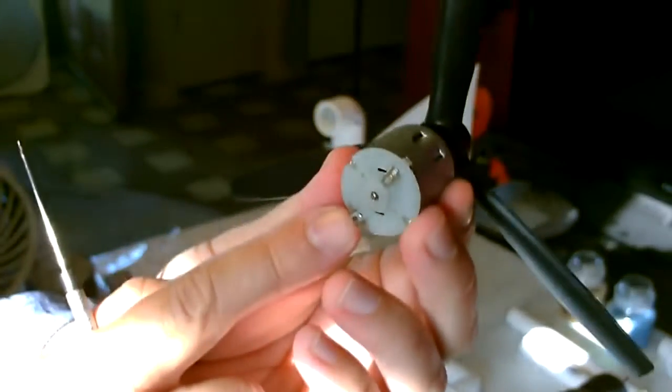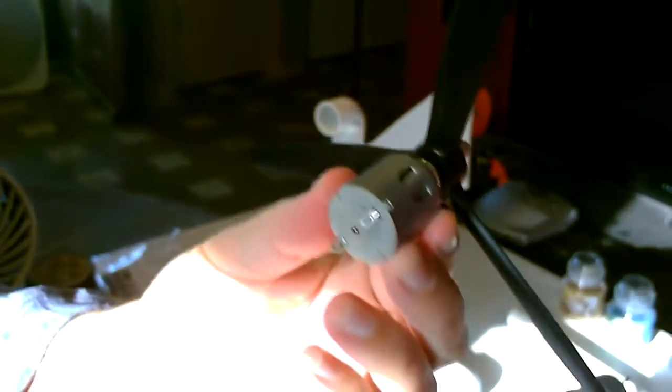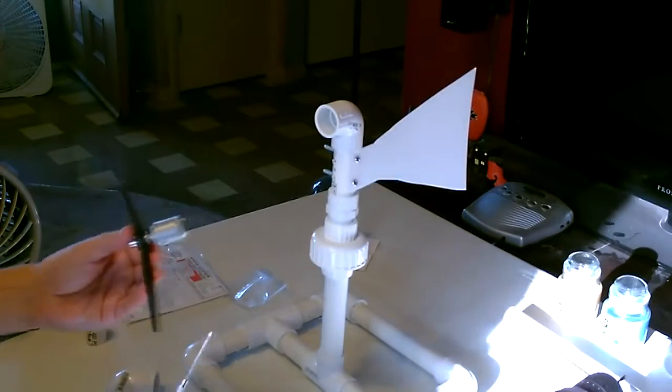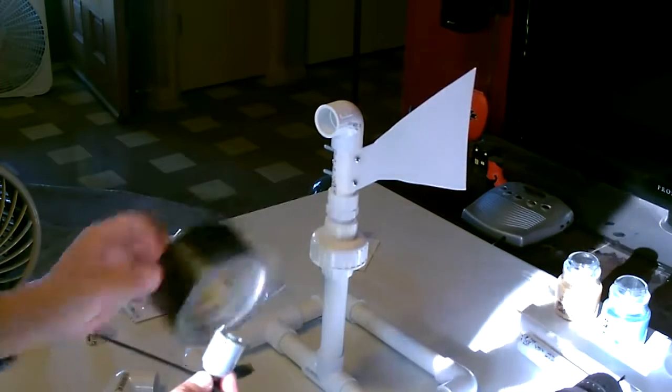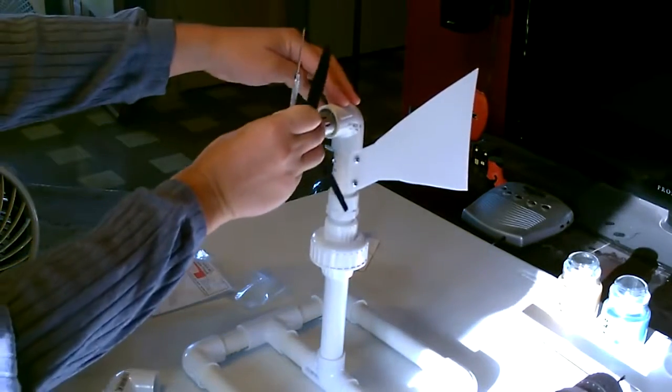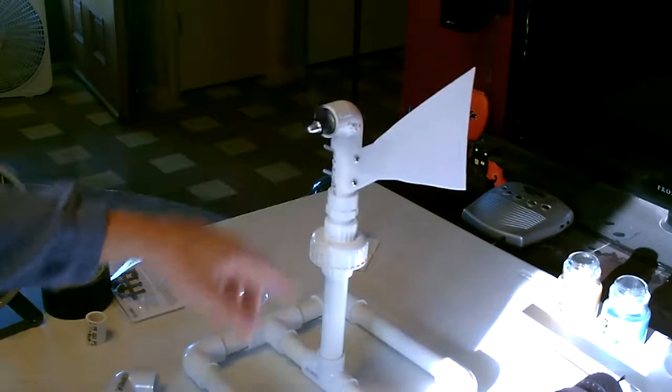Now I'm going to go ahead and solder the wires to the end of the motor and we'll drop it in. Notice it's kind of loose right now, so I'll take some electrical tape - or I'm going to use black duct tape. We'll wrap it around a few times and it'll fit in there nice and tight.